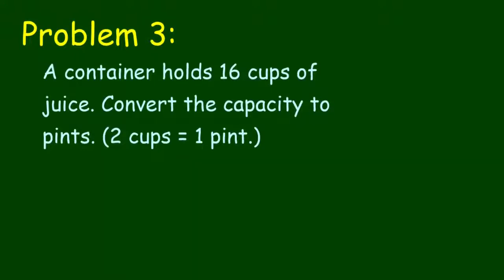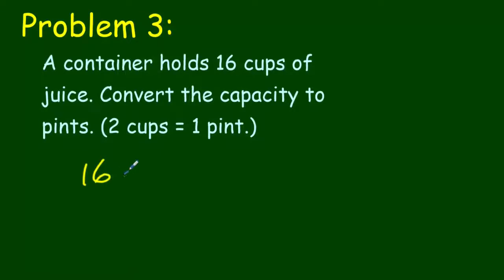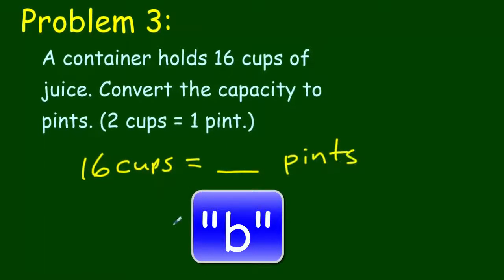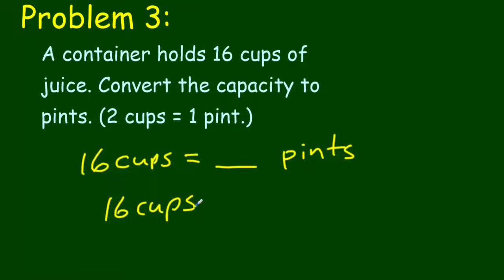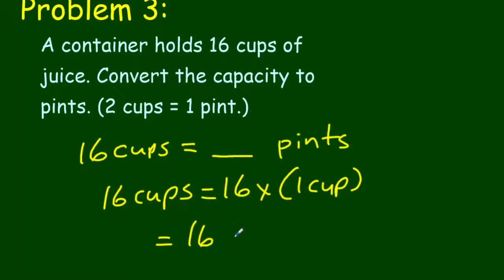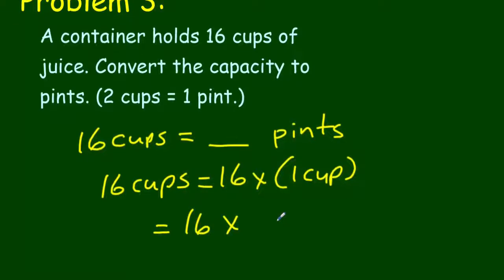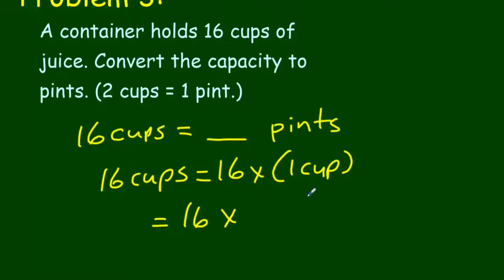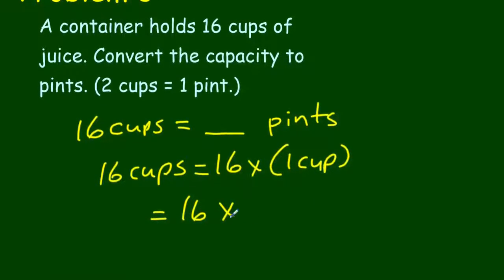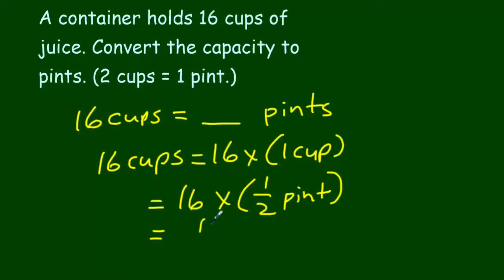Problem three says a container holds 16 cups of juice. Convert the capacity to pints. Two cups is equal to one pint. 16 cups is equal to how many pints? We can do what we have been doing and take the 16 cups and show that as two factors. We're going to have 16, and we want to find that conversion factor, one cup. Cups are smaller than pints, so we're going to have a fraction here. What is one cup of one pint? Since it takes two cups to make one pint, one cup would be one-half pint. That becomes my conversion factor. When I multiply through, I'm going to have 16 over 2, which is going to be equal to 8 pints.